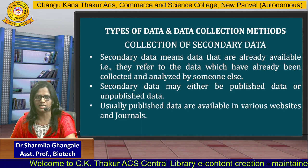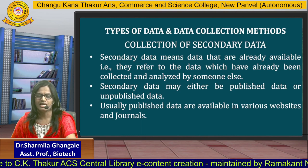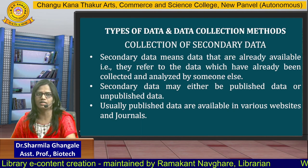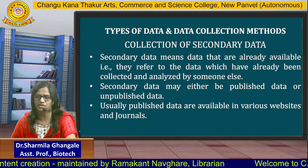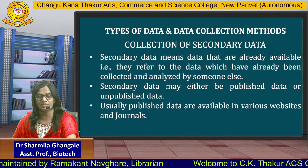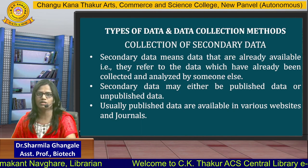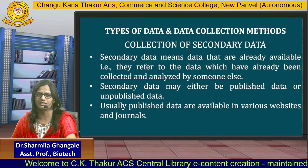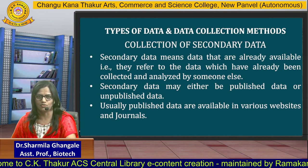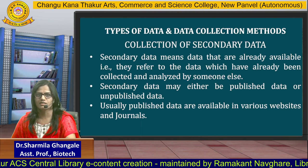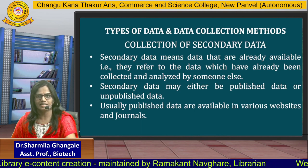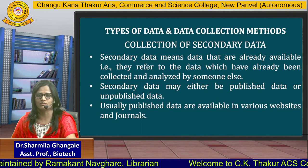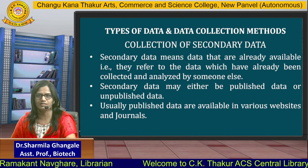The last method is collection of secondary data. Secondary data means data that are already available — data which have already been collected by someone and analyzed by someone. Secondary data may either be published or unpublished, but it has already been analyzed by someone. Usually, published data are available in various websites and journals. This secondary data is collected in order to have a review of the literature; the review of literature is called secondary data collection. Secondary data is collected by means of various published journals as well as published books.